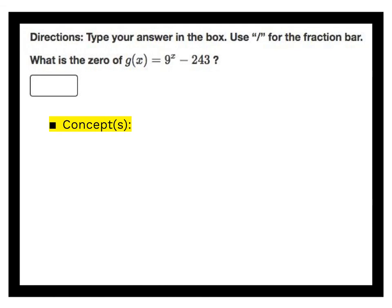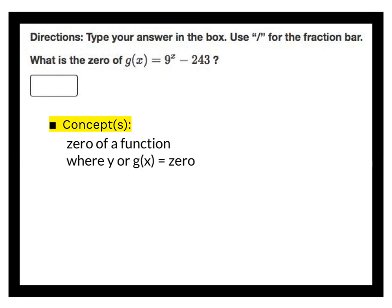This TEI question says type your answer in the box and to use a forward slash for the fraction bar — which tells us the answer will be a fraction. We're asked to find a zero of the function. A zero is where y equals 0, or where g of x equals 0 — it's really an x-intercept. That's what we need to find for this problem.